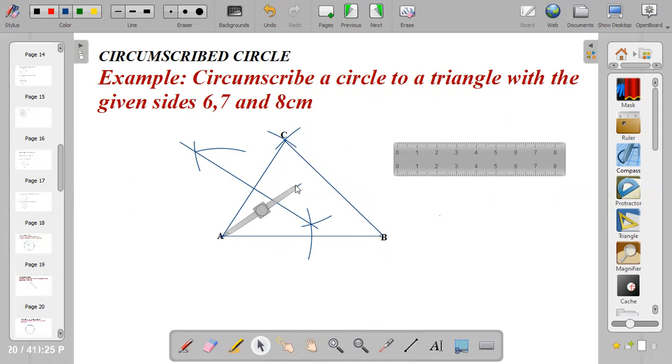So to bisect, I'll strike an arc above and below, and I'll take it to point B using the same radius.